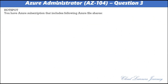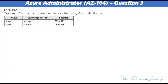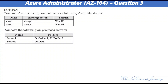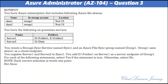Question number three. You have an Azure subscription that includes the following Azure file shares. Share one is in storage account storage one in West US; share two is in the same storage account storage one in West US. You have on-premises servers: server one with folders D-folder-one and E-folder-two, and server two with D-data. You create a storage sync service named sync one and an Azure file sync group named group one. Group one uses share one as a cloud endpoint. You register server one and server two in sync one, and add D-folder-one on server one as a server endpoint of group one.